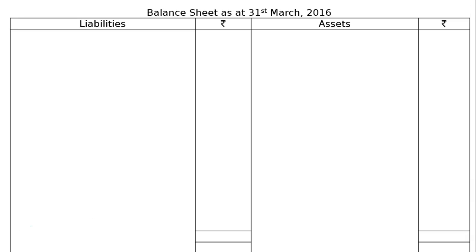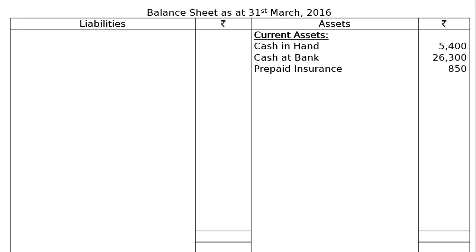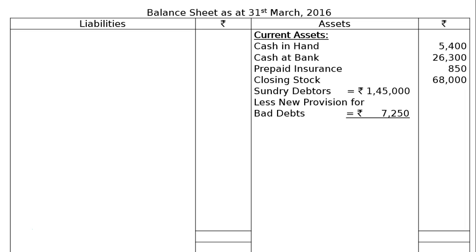Then come down to the balance sheet as at 31st March 2016. Start from the asset side — current assets. We have cash in hand Rs. 5,400, cash at bank Rs. 26,300, prepaid insurance Rs. 850, closing stock Rs. 68,000. Sundry debtors Rs. 1,45,000, less new provision for bad debts Rs. 7,250. After deducting, we can have Rs. 1,37,750.